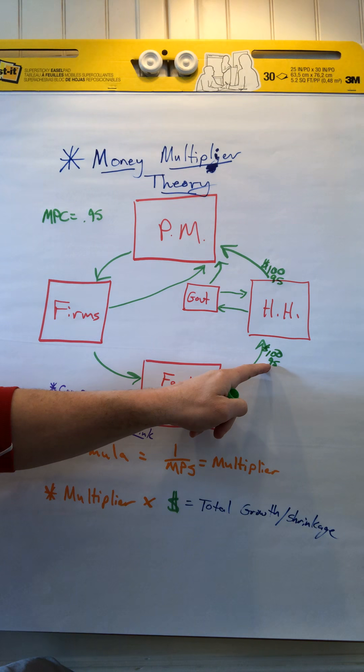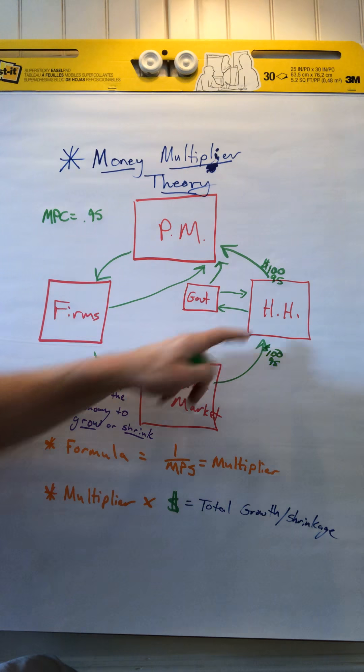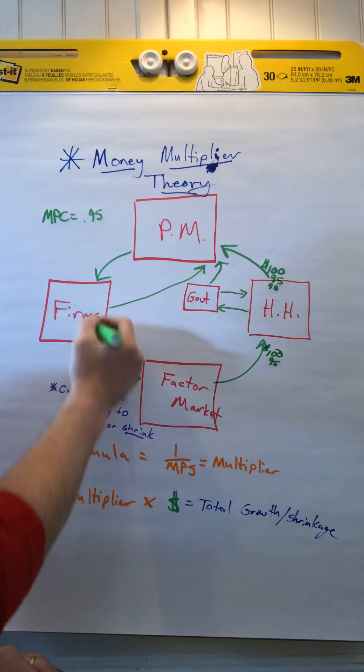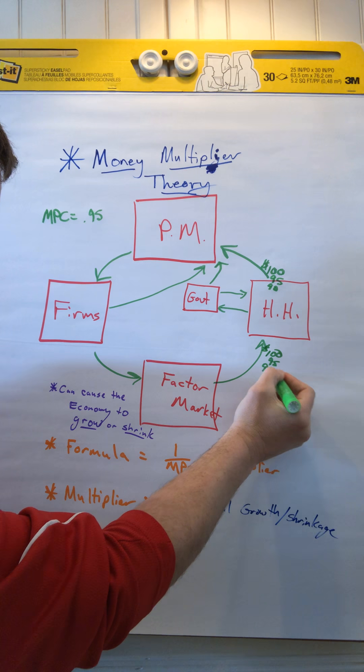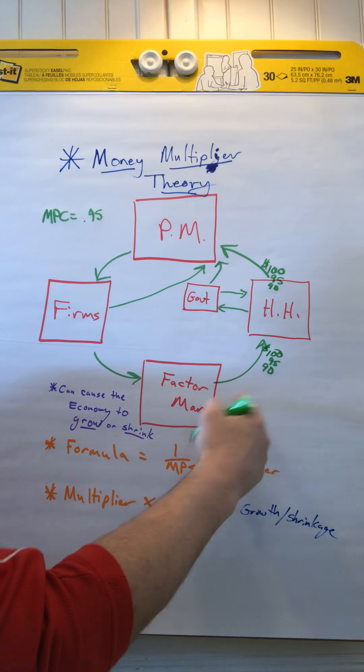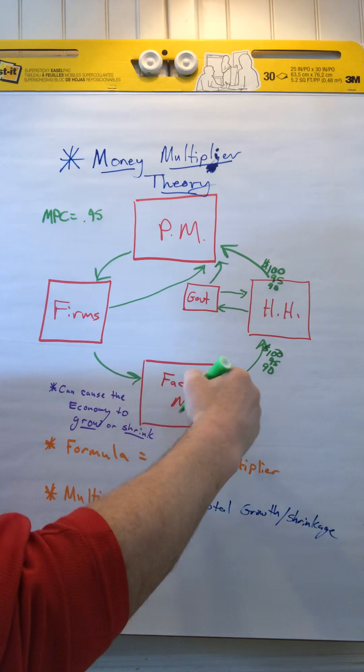Now out of that $95, we're only going to spend 95% of it. So let's just say it's $90 to keep the math easy. $90 is going to get spent again, and $90 is going to come back to us in the form of money, cash. And it's going to keep doing that, and eventually you're going to run into zero because of money and the 95% and so on.